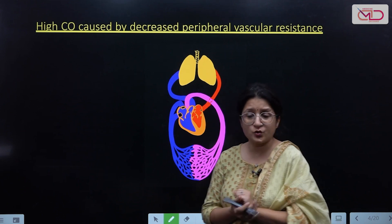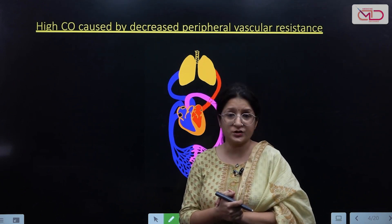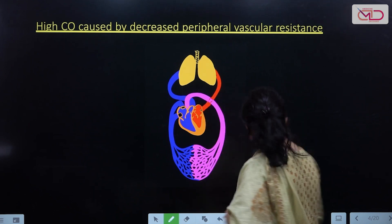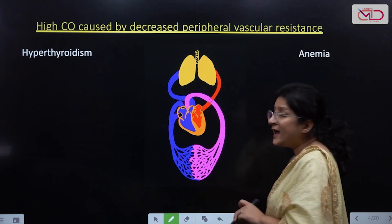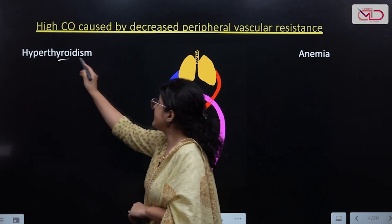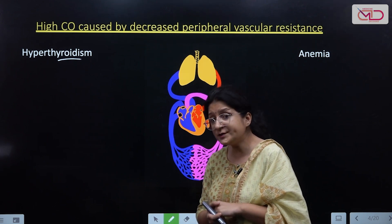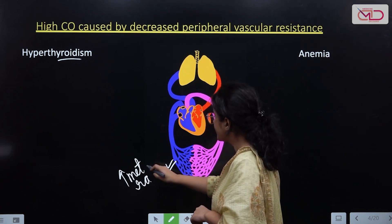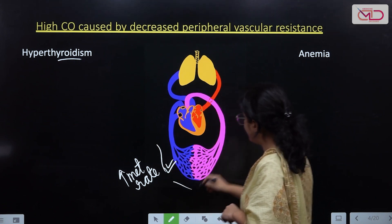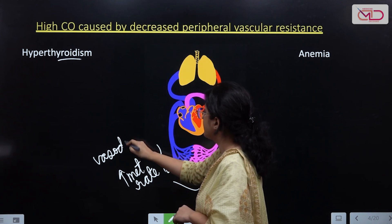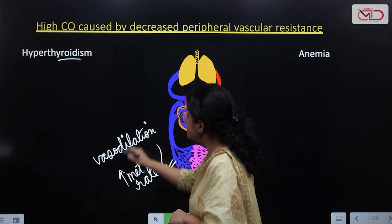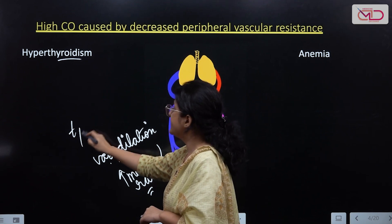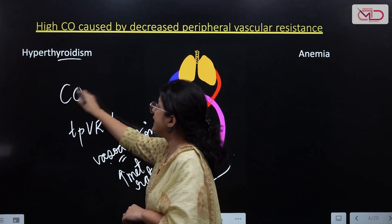Two important clinical conditions where we find high cardiac output due to decreased peripheral vascular resistance are hyperthyroidism and anemia. In hyperthyroidism, excessive thyroid hormone production causes an increased metabolic rate at the tissue level, leading to local vasodilation. This increases demand for cardiac output, decreases total peripheral vascular resistance, and as a result cardiac output increases.